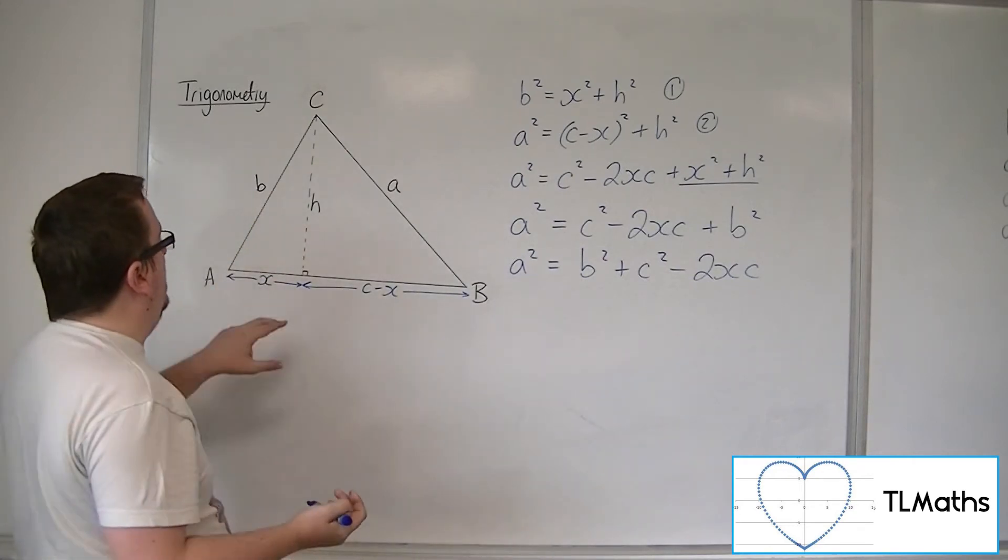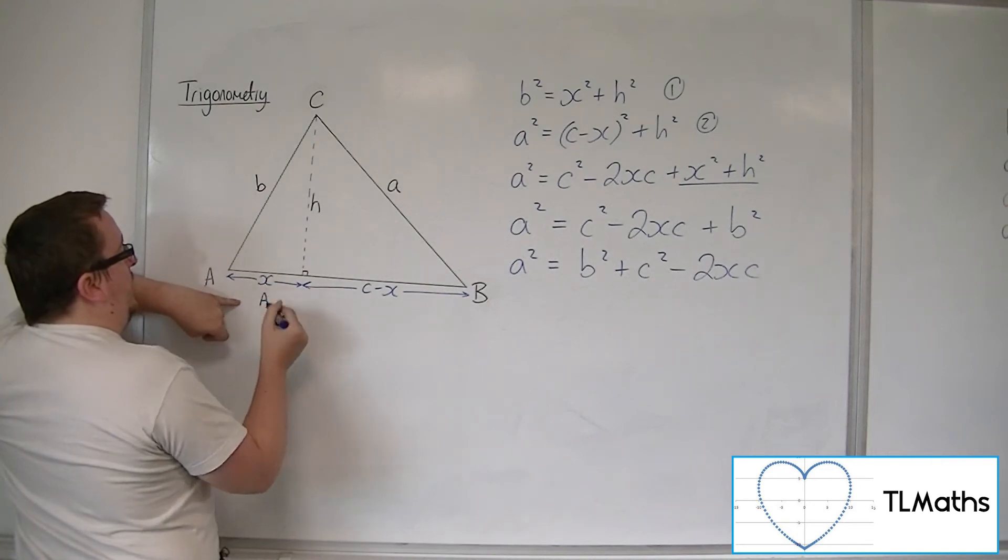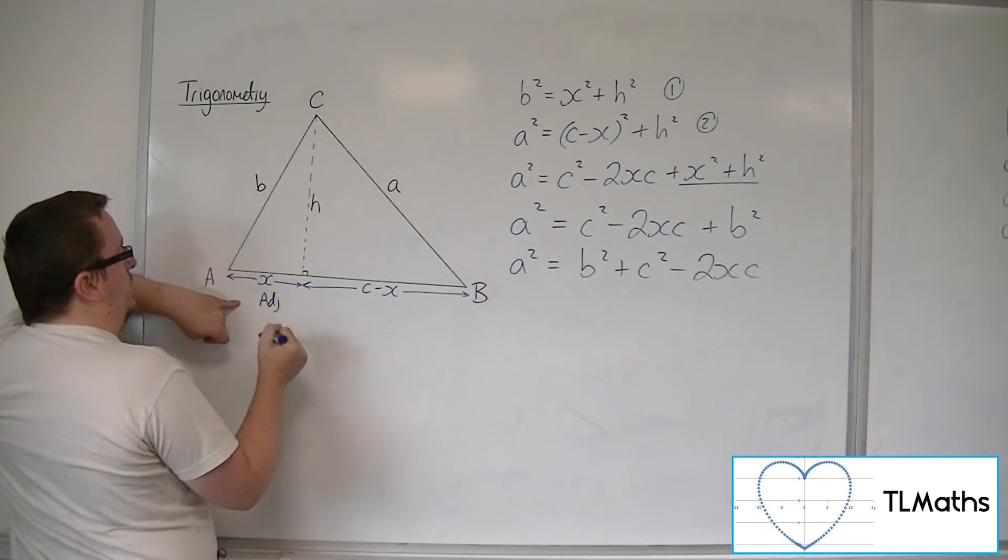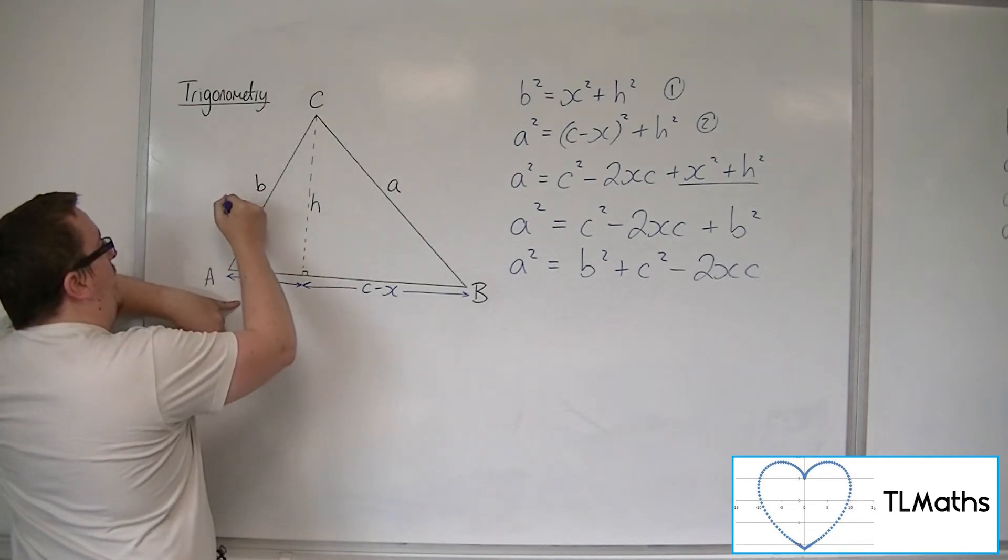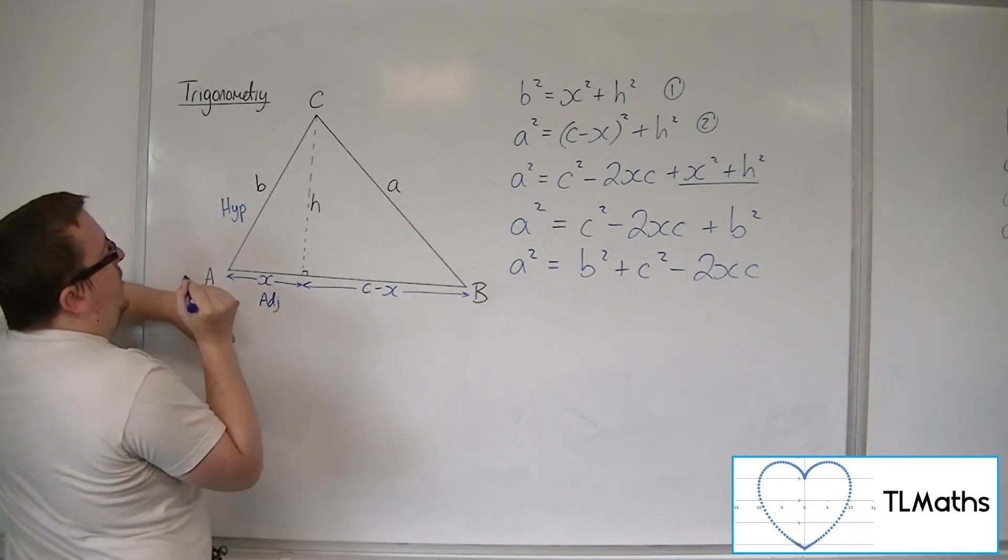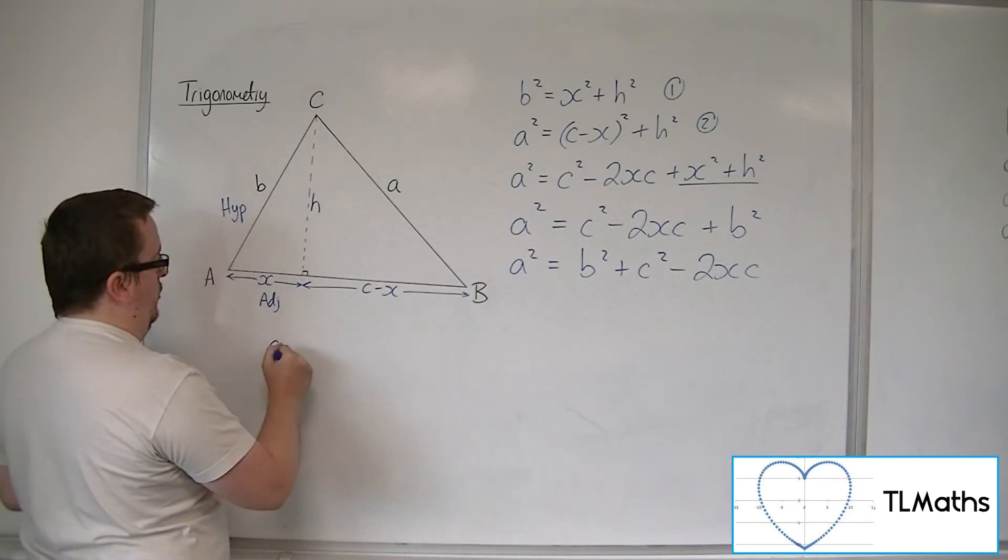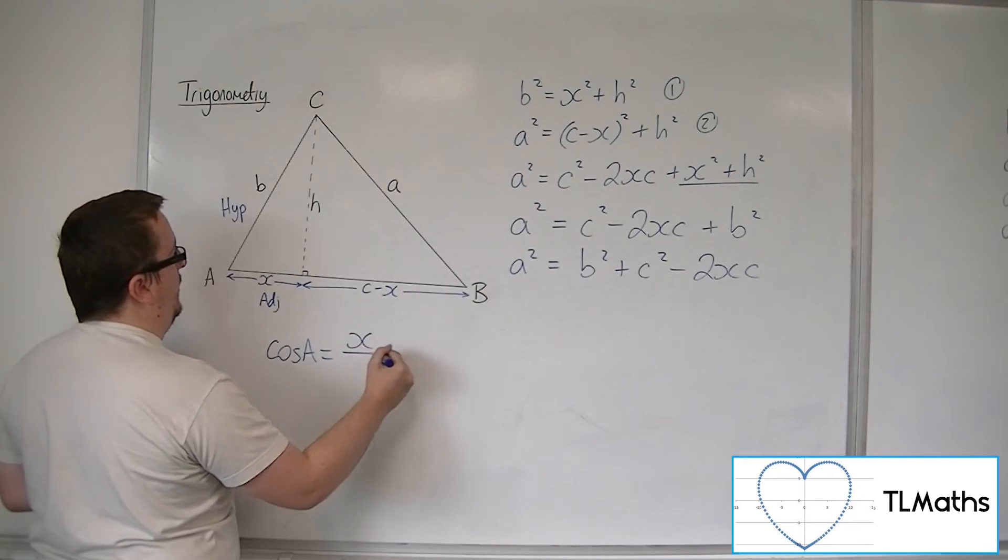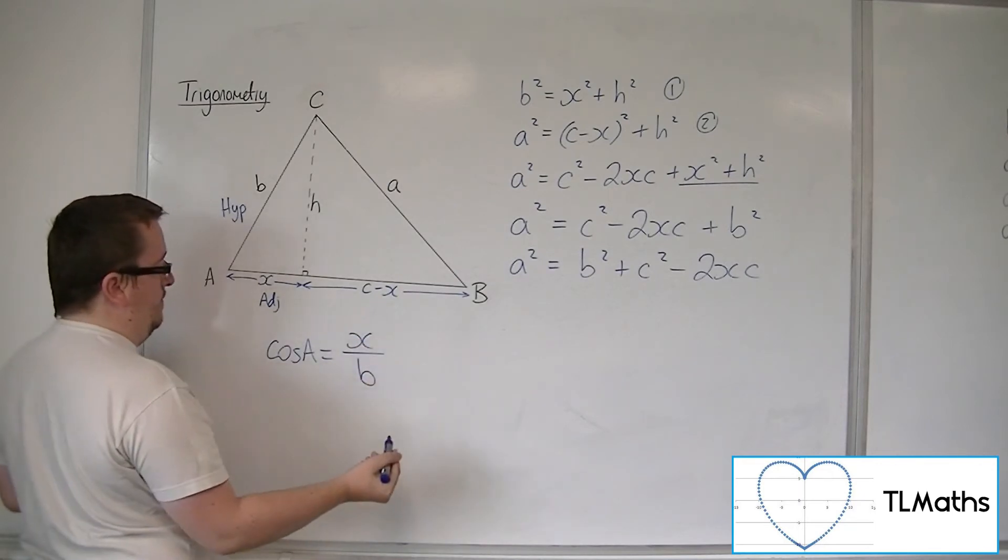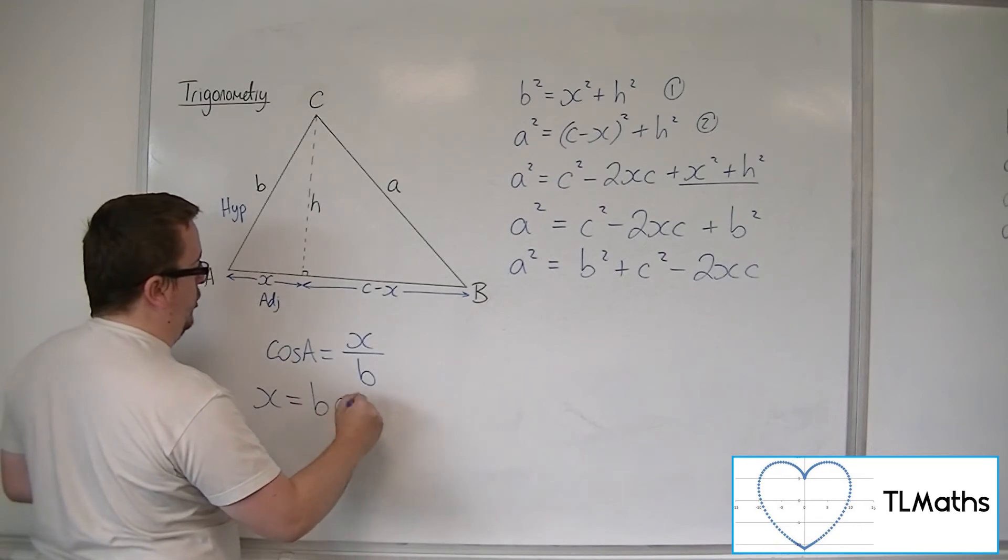So X being the adjacent to this angle A, and B being the hypotenuse to that angle, then we've got adjacent over hypotenuse. So cosine of the angle A must be equal to the adjacent X over the hypotenuse B. So X must be B cos A.